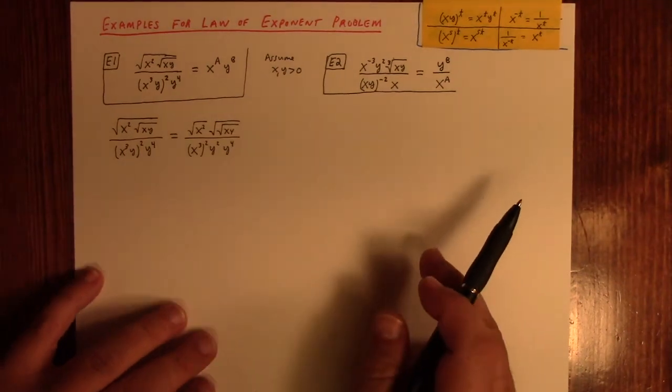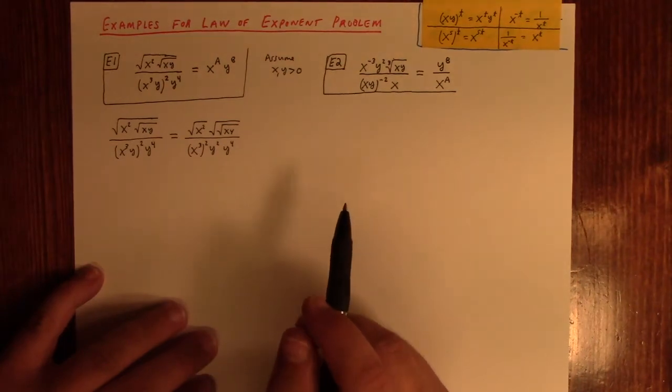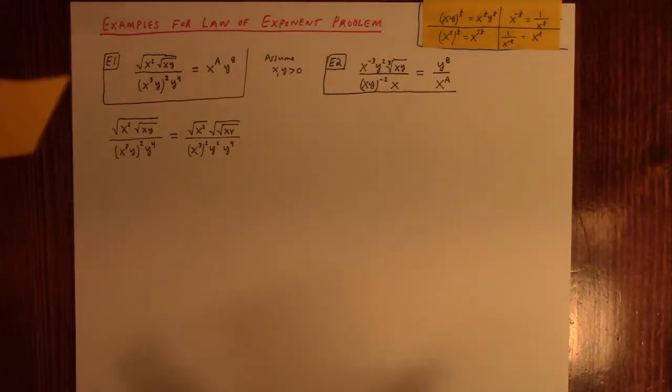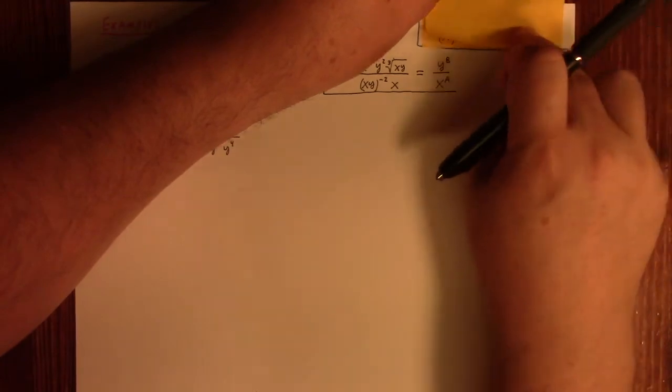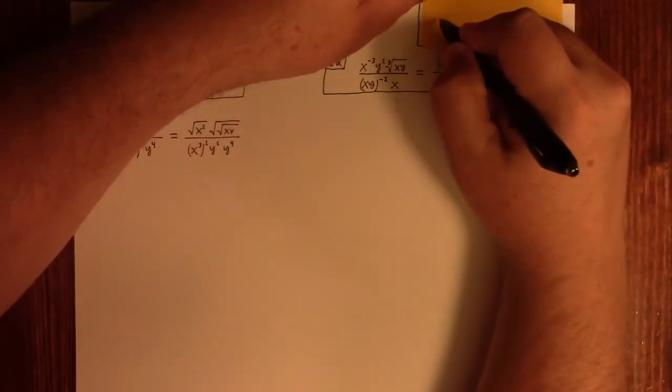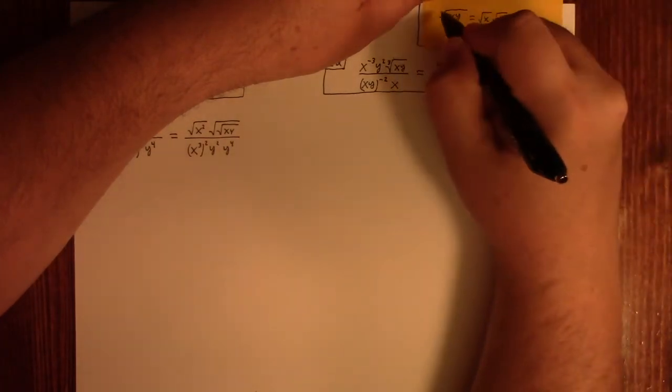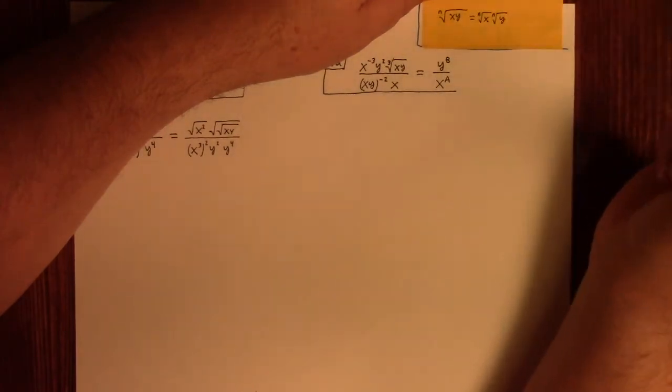And, of course, this equally well applies to square roots. So if I have square root of x, y, it's like square root of x, times square root of y. And the same for the nth root. If I had, like, a 3 or something else, it would still work the same.